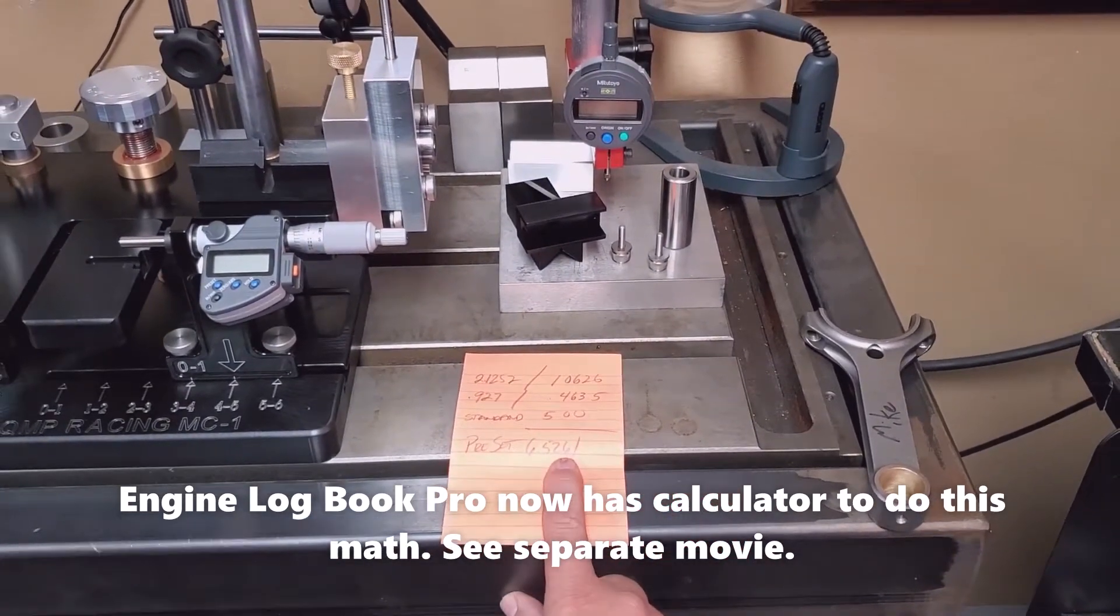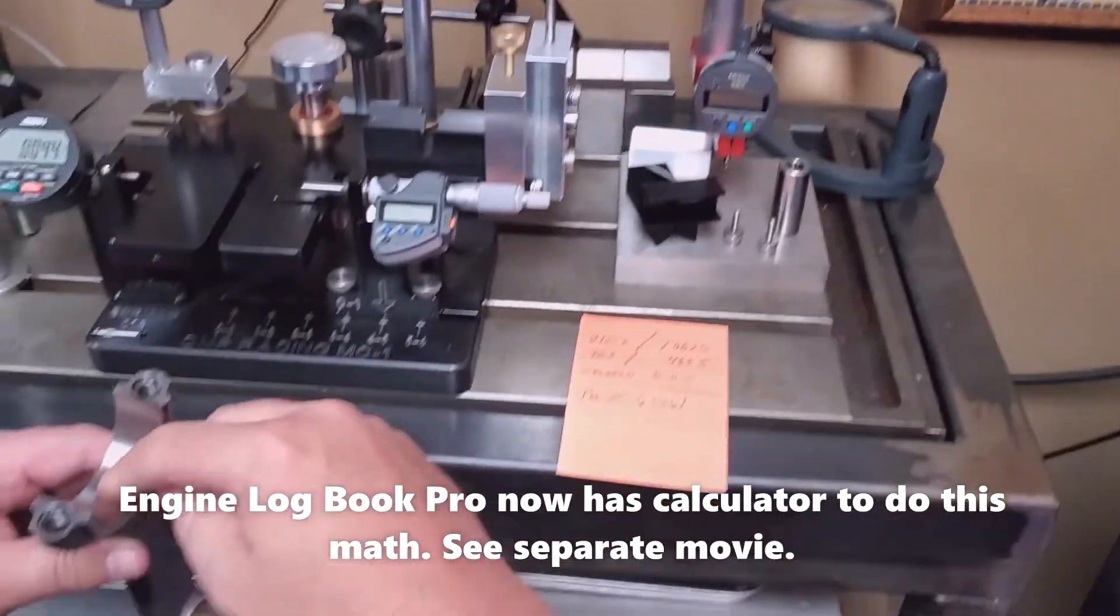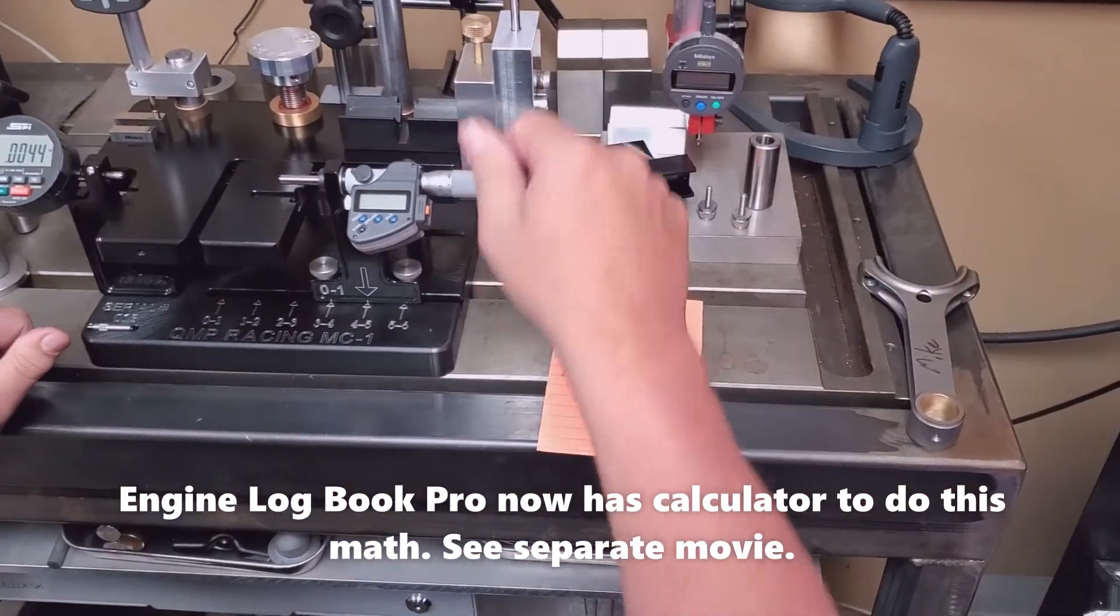My preset needs to be 6.5261, for when you measure it from here, it'll show the correct length without any math.